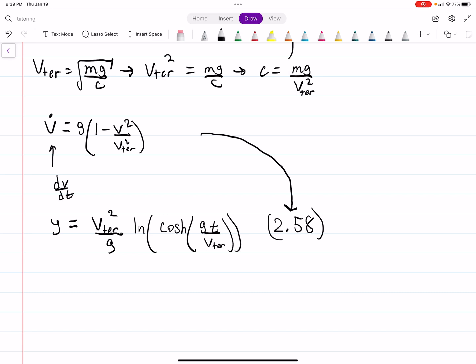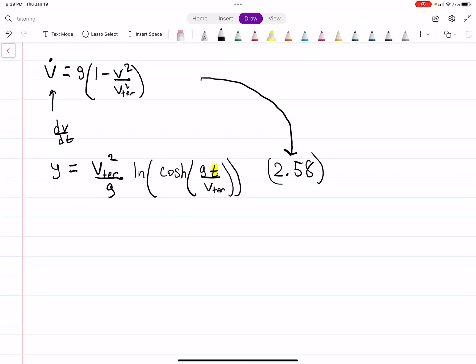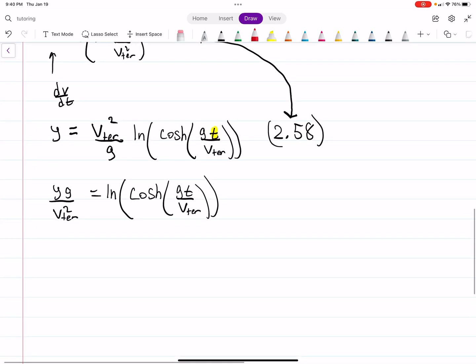But regardless, let's go ahead and solve this. So what we wanted to find is the time it takes to go that distance. So to do that, we obviously just need to solve for what we have here. So we can say Y times G over V terminal squared is the natural log of hyperbolic cosine GT over V terminal. And then, of course, raised to the power E. And you get E to the power YG over V terminal squared is equal to cosine hyperbolic. So I will take cosine hyperbolic inverse of both sides, which is equal to GT over V terminal.